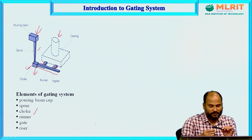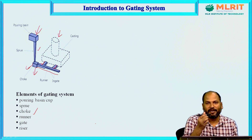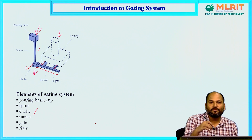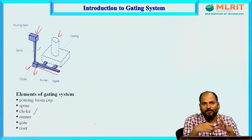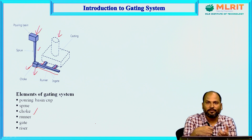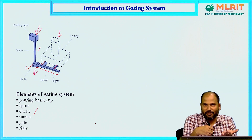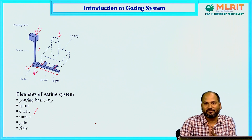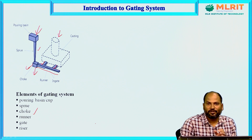For example, suppose we want to design a pen — the first requirement would be that the friction coefficient should be high so it can be held properly. Its length should also be optimum — not too long and not too small. So design means deciding what material to use, what is the shape and size of the element, and where in the gating system it should be placed — all of these play a very important role.